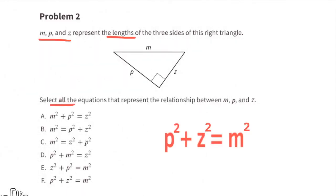Problem number two. M, P, and Z represent the lengths of the three sides of this right triangle. Select all the equations that represent the relationship between M, P, and Z. Just like the Pythagorean theorem, a squared plus b squared equals c squared, we're looking for p squared plus z squared equals m squared.